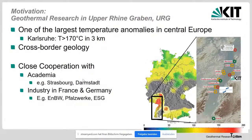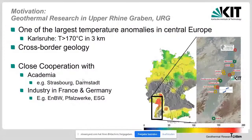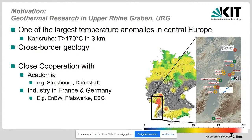The Rhine Graben is a cross-border geology between France and Germany, so operation and investigation require cooperation — we have a close collaboration with Strasbourg and strong collaboration with industry in both France and Germany. On the temperature scale, temperatures above 150°C are found at 2.5 km depth in parts of the Rhine Graben.